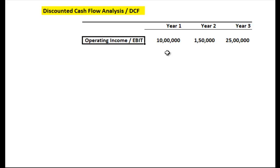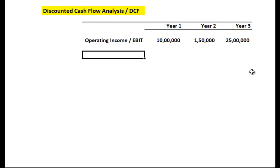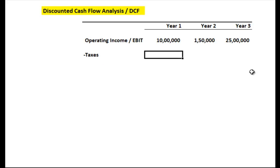In year three, your operating income is 25 lakhs. This operating income is also called operating cash flow. Now from your operating income, we are going to subtract the taxes, because tax is cash leaving the company. The goal is to get to the cash number available after all cash expenses. Let's say in year one you paid roughly 2 lakhs in taxes, year two 2.5 lakhs in taxes.